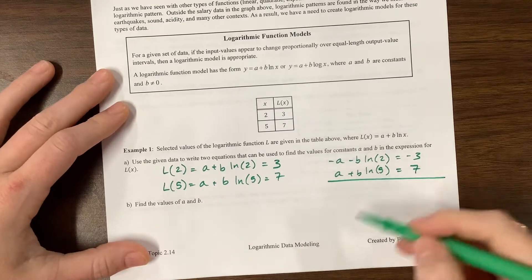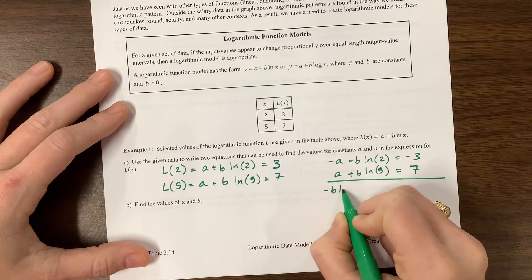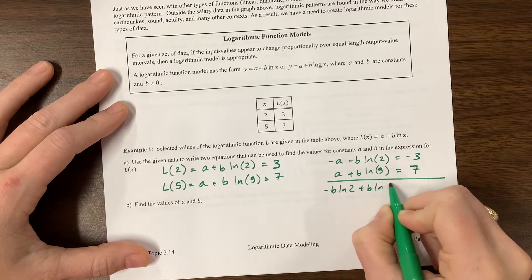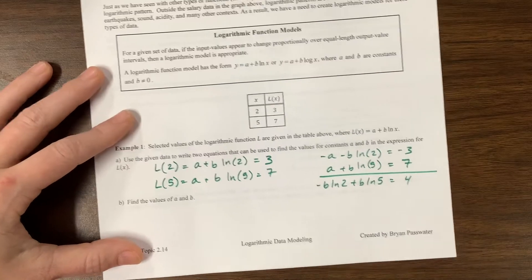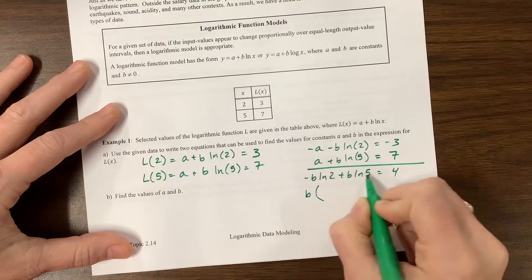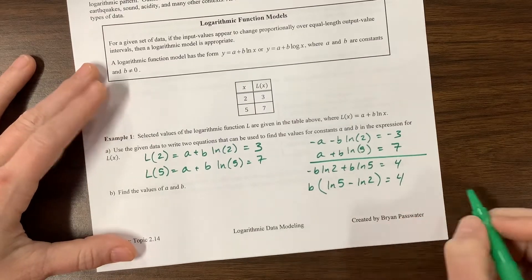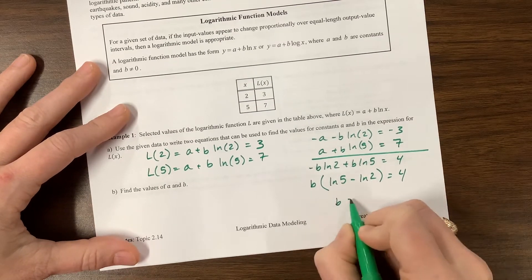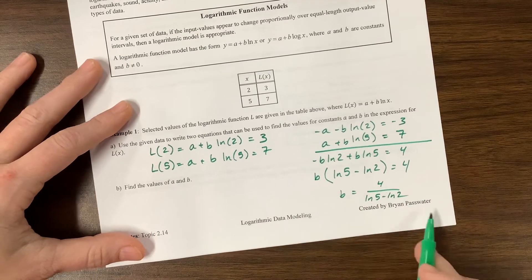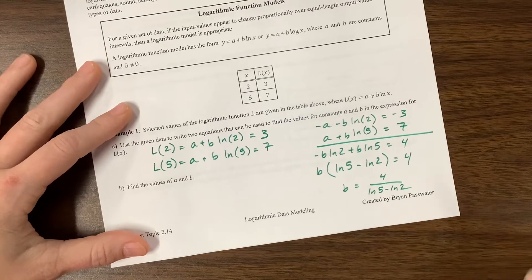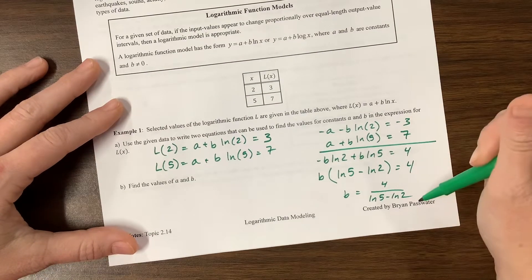So here we go, we have our system, our A's cancel and I have negative B times the natural log of 2 plus a positive B times the natural log of 5 is equal to 4 once my A's cancel out. I can factor out a B and we have positive natural log of 5 and negative natural log of 2, and this is equal to 4. So my exact value for B is B equals 4 over the natural log of 5 minus the natural log of 2. I could use other properties and squish this together with division, but I don't know that that really helps us. If I want you to write it in a certain form, I'm going to tell you what form I want you to write it in.